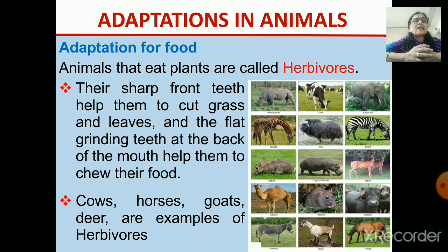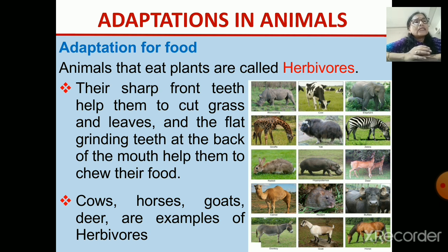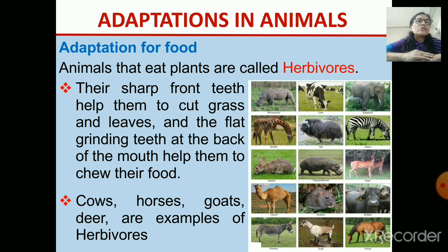There are also adaptations for food. Animals are divided according to the food they eat — like herbivores, carnivores, and omnivores. Examples of herbivores are cow, goat, zebra, horse, and elephant. What are the adaptations that make them herbivores? The adaptations are in their teeth — their sharp front teeth help them to cut the grass and the leaves.